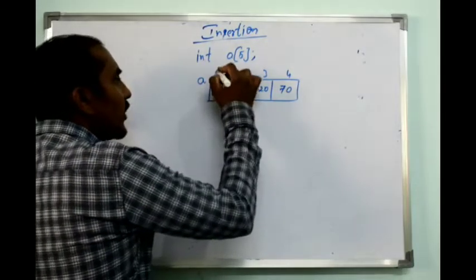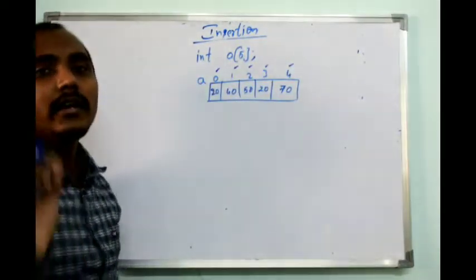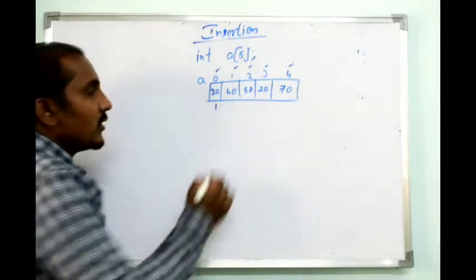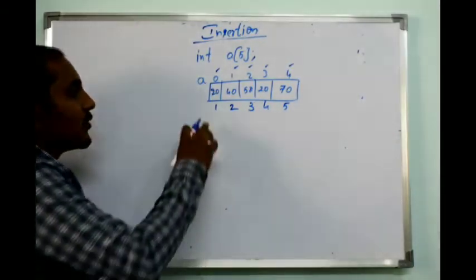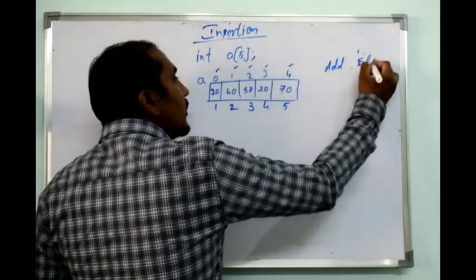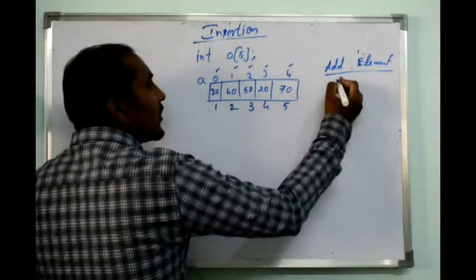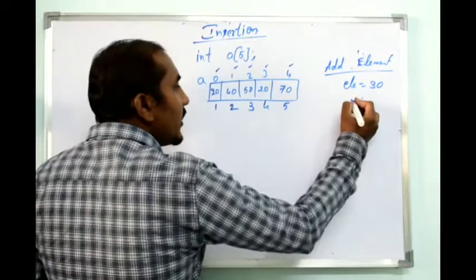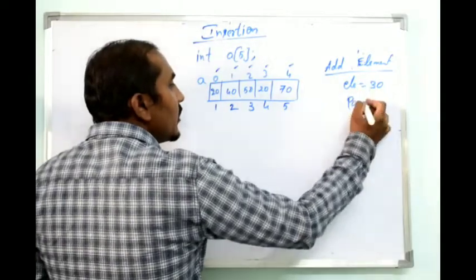Consider index values 0, 1, 2, 3, 4. Index starts from 0. The corresponding positions are first, second, third, fourth, and fifth. Suppose I want to insert a new element — say 30 — and I want to insert it at position 2.